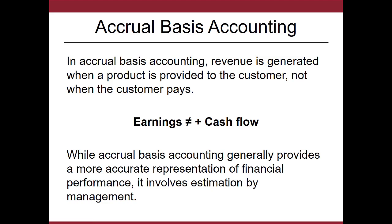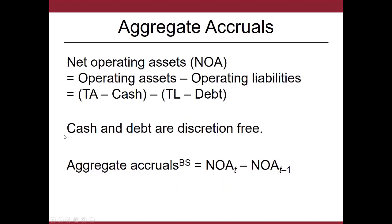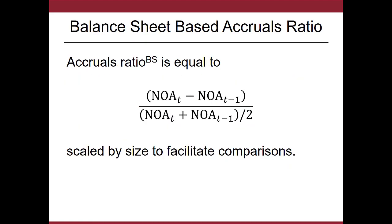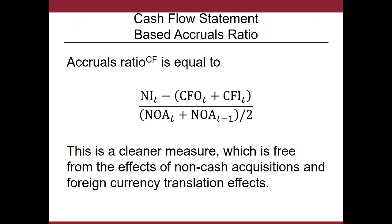There are a couple of definitions associated with this. First, you have to understand accrual basis accounting and the fact that earnings does not necessarily mean a company has positive cash flow. You can measure the aggregate accruals using the net operating assets, and you can further take this to calculating an accruals ratio that can be used to measure earnings quality. There's also a different approach called the cash flow statement approach, where it compares net income to the cash flow from operations plus the cash flow from investing.